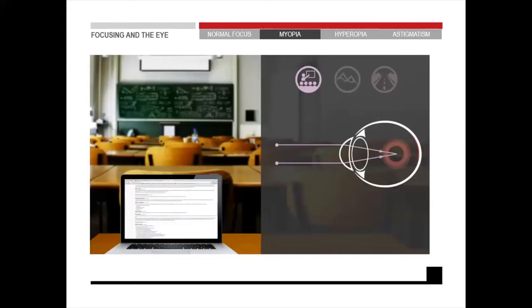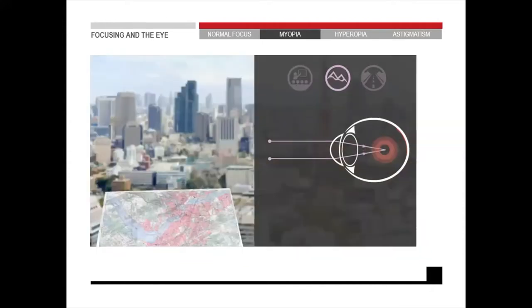This is an image of someone with myopia. You can see that the laptop screen is clear, but the front of the classroom is blurry. The further you get, the more blurry it gets. The reason this is happening is because the light that enters the eye when looking at a distant object falls in front of the retina instead of on the retina.